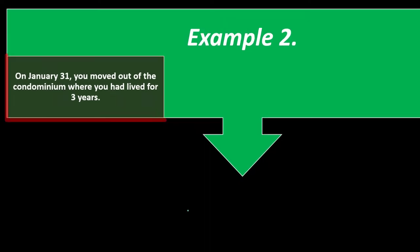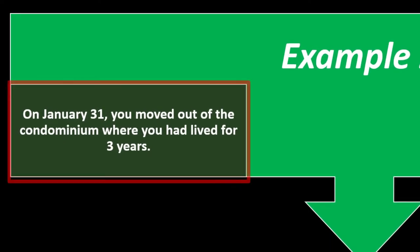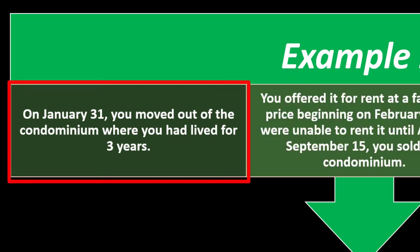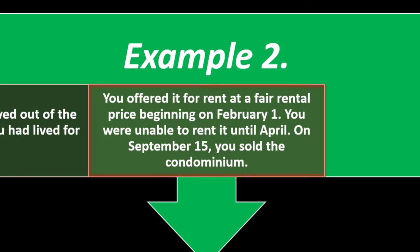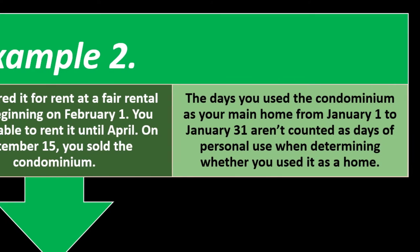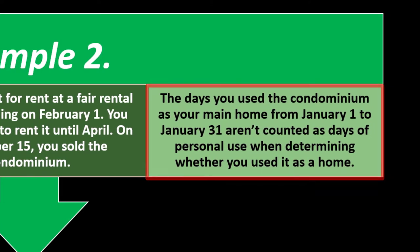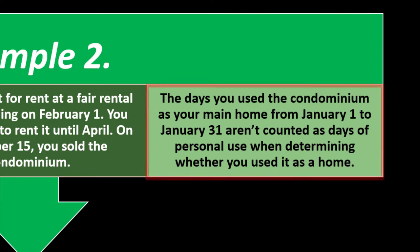Example two: On January 31st, you moved out of a condominium where you had lived for three years. You offered it for rent at a fair rental price beginning February 1st but were unable to rent it until April, when someone moved in. In September, you sold the condominium — so you didn't hold it for 12 months. The days you used the condominium as your main home from January 1st to January 31st aren't counted as days of personal use when determining whether you used it as a home.